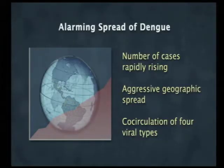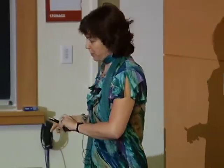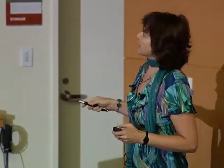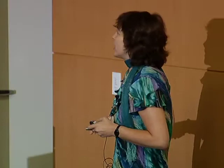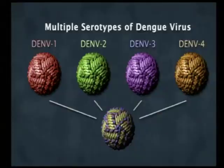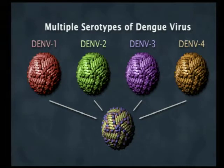We're concerned about dengue for three reasons: the number of cases is rapidly rising, there is very aggressive geographical spread especially in Southeast Asia and Latin America, and there is increasing co-circulation of the four serotypes. Looking at cases over decades, you can see a cyclic nature that grows greater and greater every year — we're pretty much off the map now. The co-circulation of all four serotypes is what's associated with epidemics of severe disease.